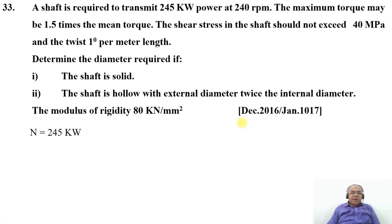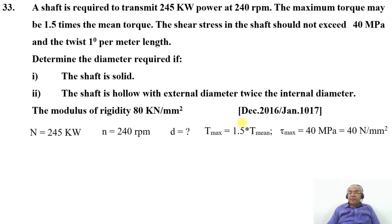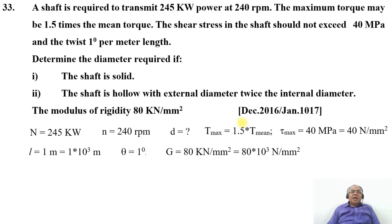We analyze the given data: N = 245 kW, n = 240 rpm, maximum torque T_max = 1.5 times T_mean, shear stress τ = 40 N/mm², and twist θ = 1° = (1 × π/180) per meter length, so L = 1 m = 1 × 10³ mm. G = 80 kN/mm² = 80 × 10³ N/mm². For the hollow shaft, the external diameter d0 = 2 × di.